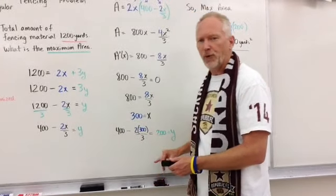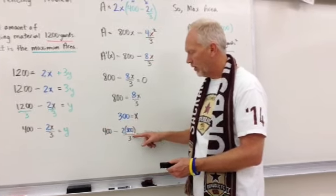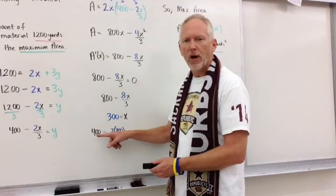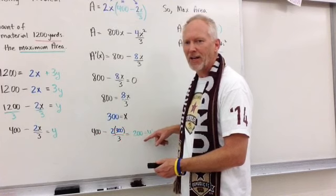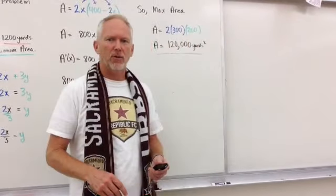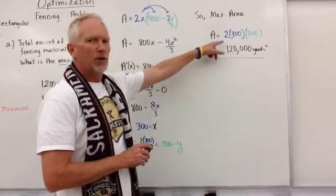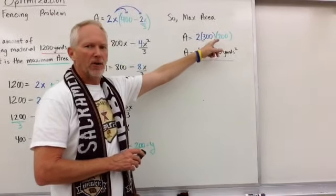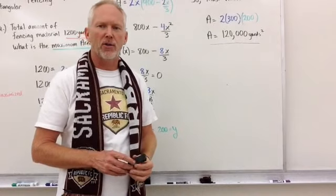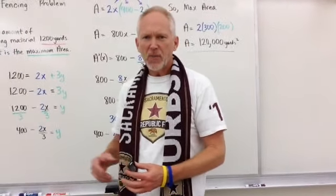Now we solve for y using our equation y equals 400 minus 2x over 3. Substituting x equals 300: 2 times 300 is 600, divided by 3 is 200, so 400 minus 200 equals 200. So y equals 200. Now we can figure out our maximum area: 2 times 300 times 200 equals 120,000 square yards of area, based on 1,200 yards of fencing. That's a pretty big area.